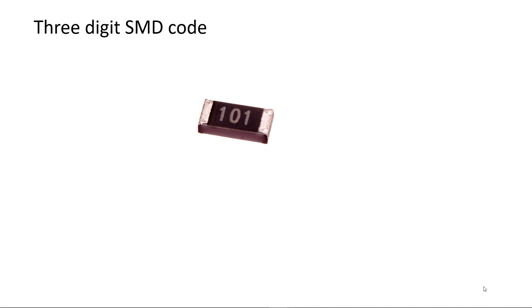Generally, if a surface mount resistor is an 0805 or larger, it will use a 3 or 4 digit code. The first two digits denote the first two digits of the resistor's value, and the third identifies the multiplier which equals the number of zeros that follow. So this 101 resistor is a 100 ohm resistor. Tolerance is not included in the code, but most surface mount resistors are 1% or better.